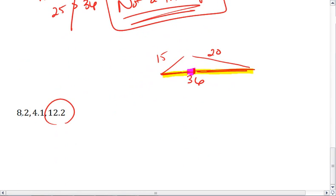And then lastly, we look at 8.2 plus 4.1, which is 12.3. That is, in fact, greater than 12.2, so again, we're good.